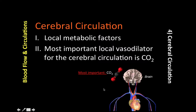In cerebral circulation, it is controlled almost entirely by local metabolic factors. The most important local metabolic factor — and there is only one — is CO2. Cerebral circulation also exhibits auto-regulation, similar to coronary circulation, as well as active and reactive hyperemia. The most important local vasodilator for cerebral circulation is CO2.